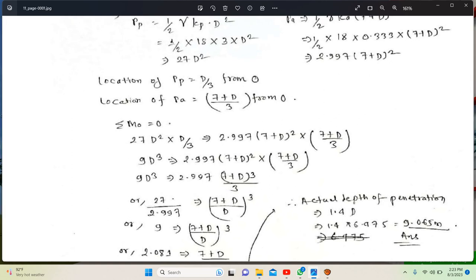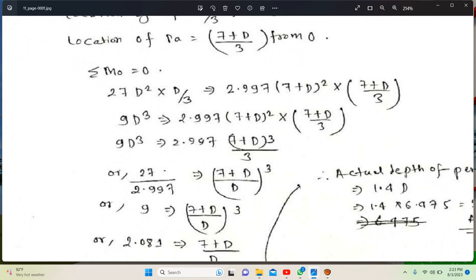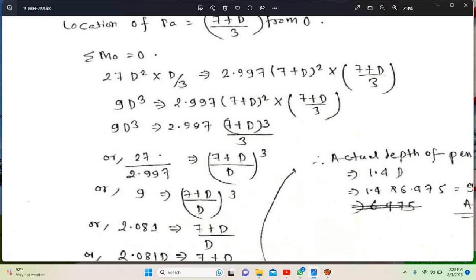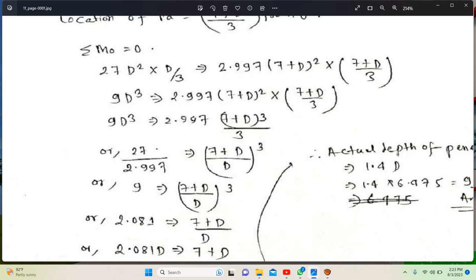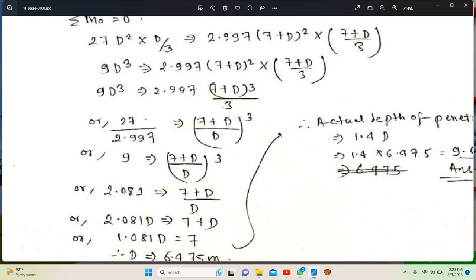Taking moments about the base: 9d cubed equals 2.997 times 7 plus d cubed over 3. Simplifying: 27 over 2.997 equals 7 plus d cubed over d cubed.